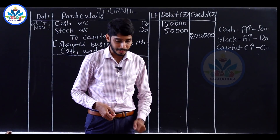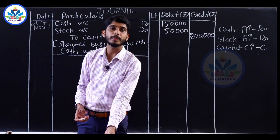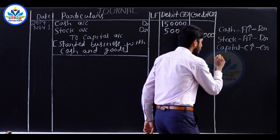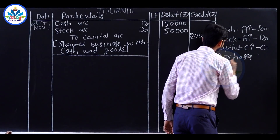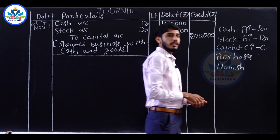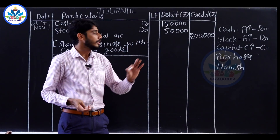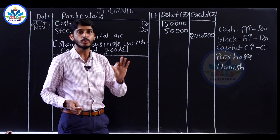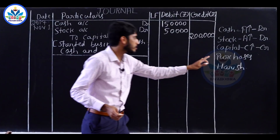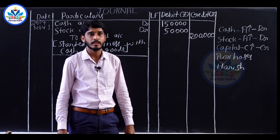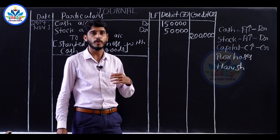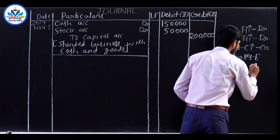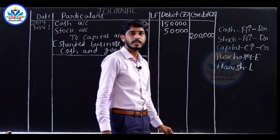Second transaction, November 3rd: purchased goods from Arish rupees 30,000. The two accounts involved are purchases and Arish account. The transaction suggests goods have been purchased from Arish on credit basis — there is no information related to cash, so we assume this is a credit transaction. Arish is a creditor, meaning a liability. Purchases is an expense.